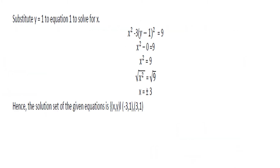Now substitute y equals 1 into equation 1 to solve for x. So x squared minus 3 times the quantity 1 minus 1 squared equals 9. Inside the parenthesis, 1 minus 1 is 0; 0 squared is still 0; and 0 times 3 is 0. So x squared minus 0 equals 9, which gives x squared equals 9.